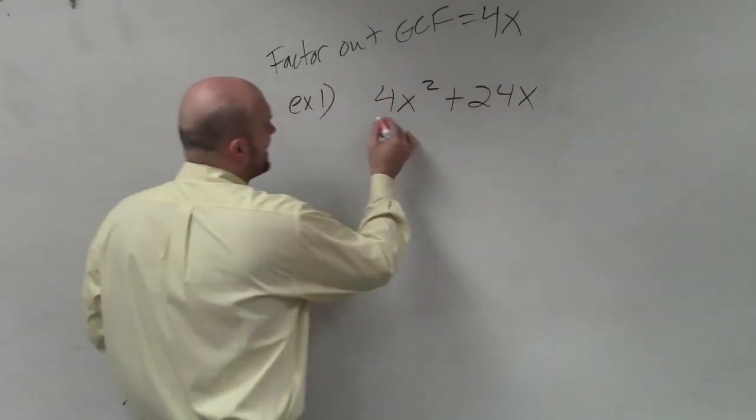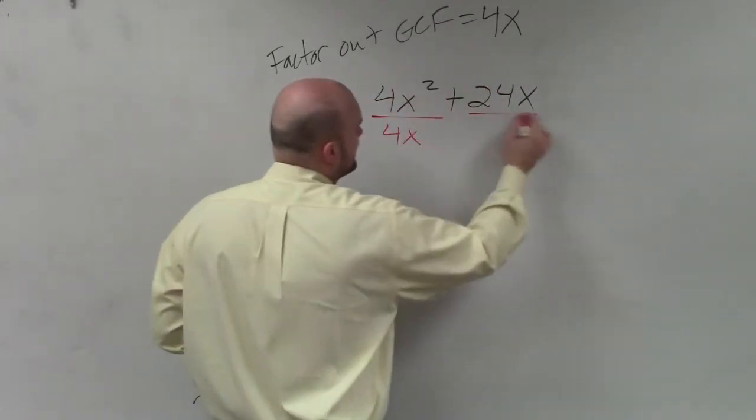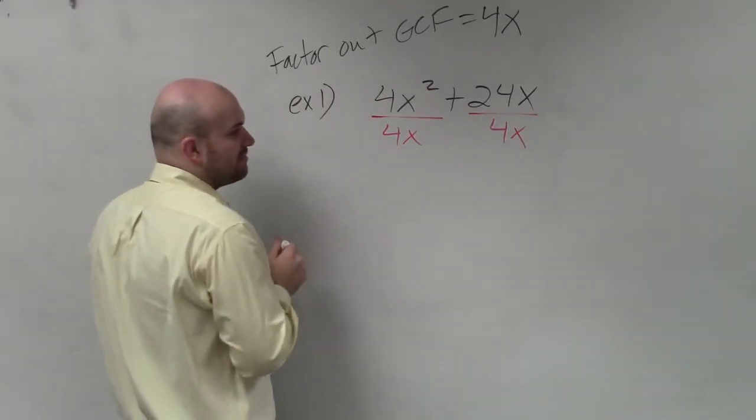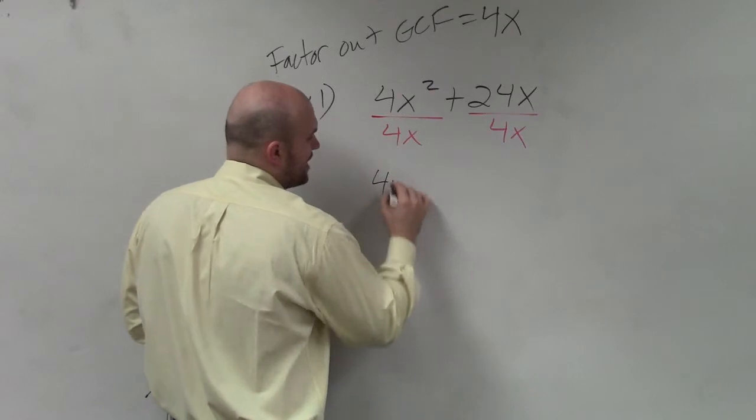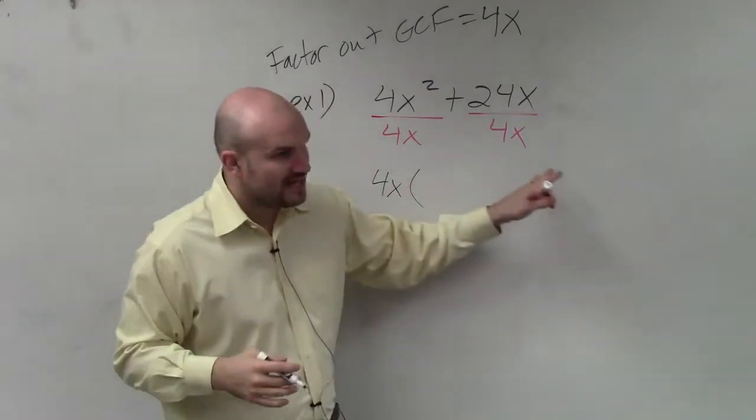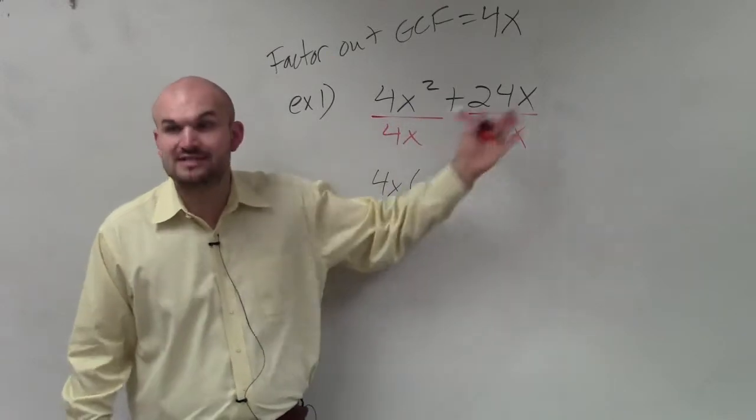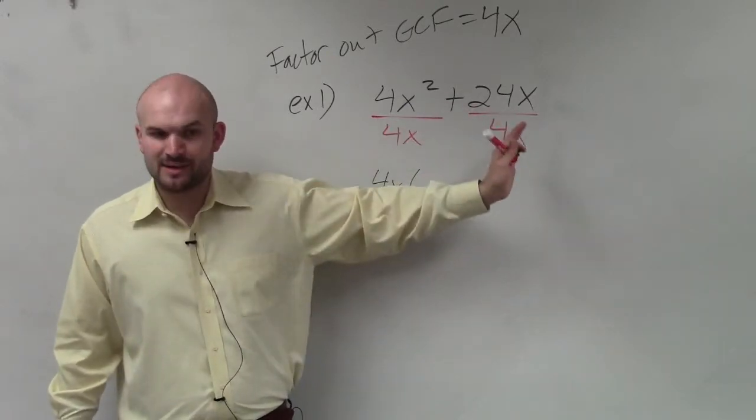So I'm going to divide each and every term by 4x. And when I factor it out, remember, we're trying to rewrite this as a product. So whatever my GCF is, I am going to be multiplying by the quotient of what happens when I divide each of my terms by my GCF.